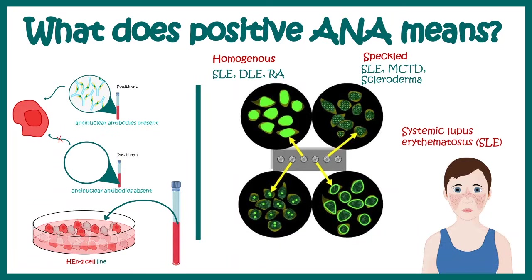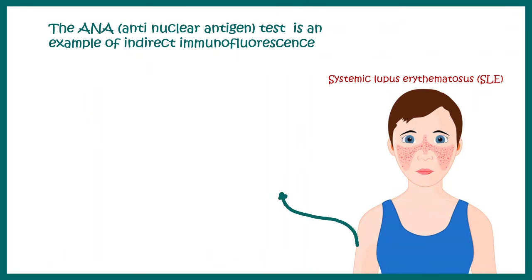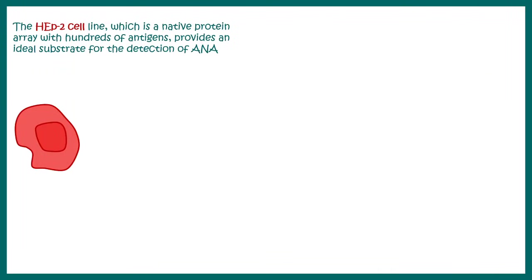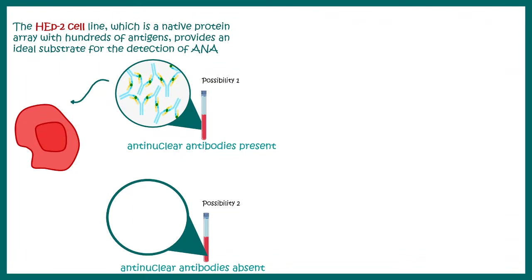Now let's talk about how lupus can be detected and what anti-nuclear antibodies mean. Anti-nuclear antibodies can be detected using a test known as the ANA test. This is a blood test where cell lines such as HEP2 cell lines are used. HEP2 cell lines are specifically chosen because these cells have hundreds of antigens which mimic the anti-nuclear antigens, and these can be detected by the anti-nuclear antibodies in the patient sample.